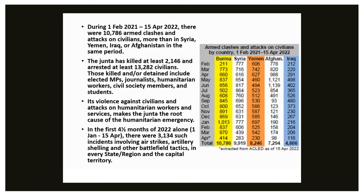There are individual cases in human rights documentation, and there is also tracking all events and summarizing them to show a pattern. We published data showing that from 1 February 2021 to 15 April 2022, there were 10,786 armed clashes and attacks on civilians in Burma, Myanmar — more than in Syria, Yemen, Iraq, or Afghanistan in the same period. You can see the numbers started to go up consistently and then remain high. We compare these figures to Syria, Yemen, and Afghanistan, and the numbers are higher in Burma, Myanmar. The source for this data is the ACLED — the Armed Conflict Location and Event Data project.